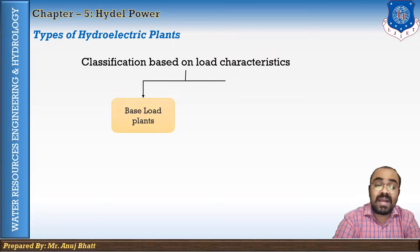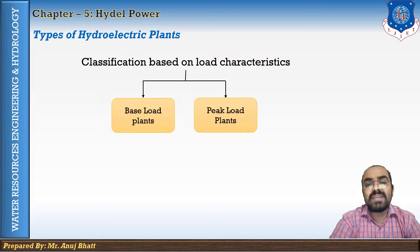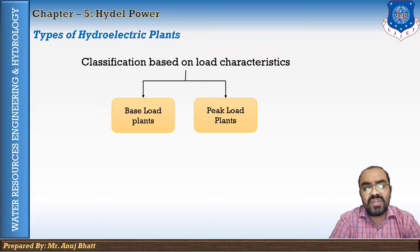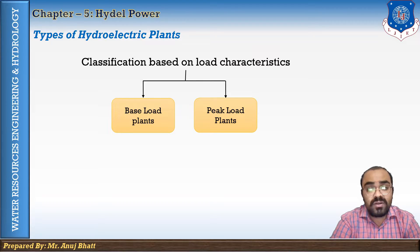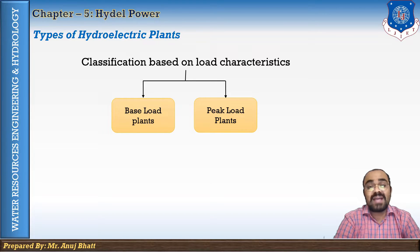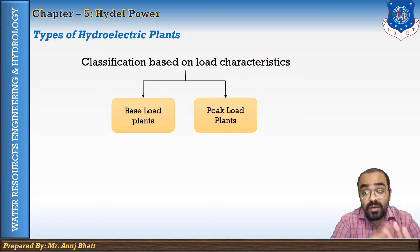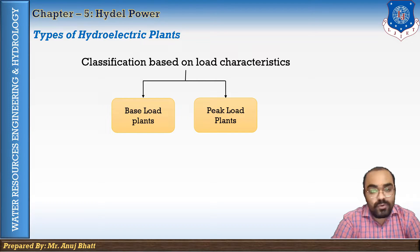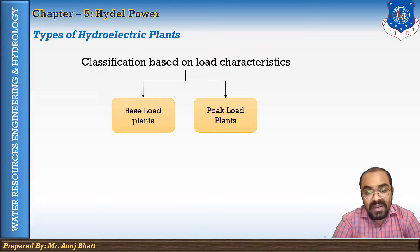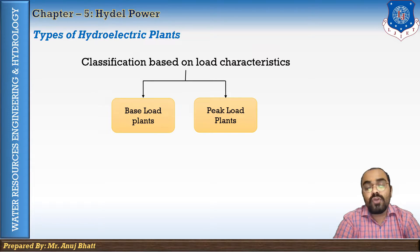The second classification is based on load characteristics: base load plants and peak load plants. Base load plants are those capable of supplying continuous power to the system throughout the year. Both runoff river plants and storage plants can be used as base load plants. When runoff river plants without pondage are used as base load plants, their full plant discharge is seldom more than the minimum flow of the river.